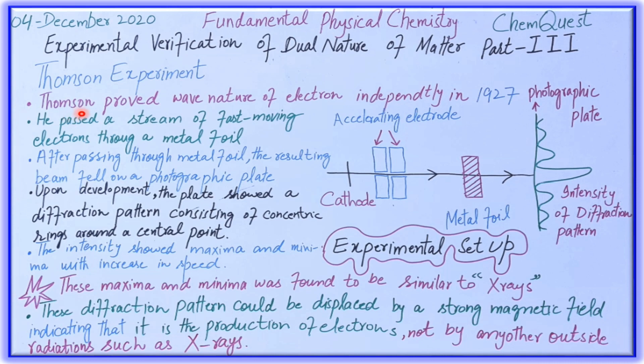What Thompson did was he passed a stream of fast moving electrons through a metal foil. He made an experimental setup which you are looking at here. This is the simplest representation of Thompson's experiment. As you can see, this is the cathode, and the cathode is used to produce the electron beam.